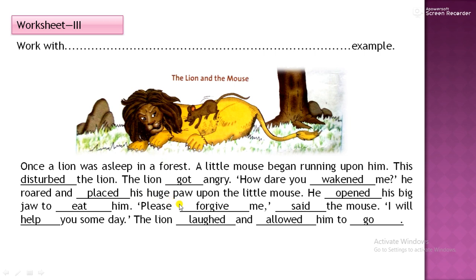Huge means very big — the paw of the lion. He opened his big jaw to eat the mouse. 'Please forgive me,' said the mouse. 'I will help you someday.' The lion laughed and allowed him to go. In these blanks, we have used the second form of the verb.